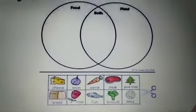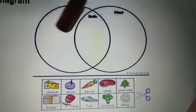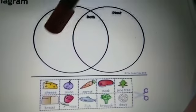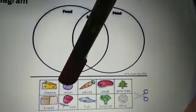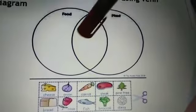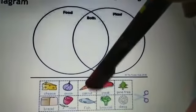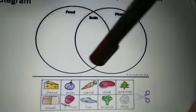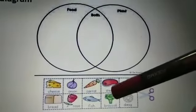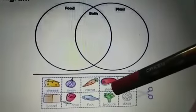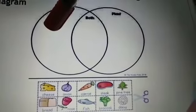If you look at the cheese, it is a food but not a plant, so it goes in the food-only part. Onion is both food and plant, so it goes in the overlap. Carrot is also a food and a plant, so it goes in the overlap. Meat or steak is a food but not a plant, so it will be like the cheese in the food-only part.